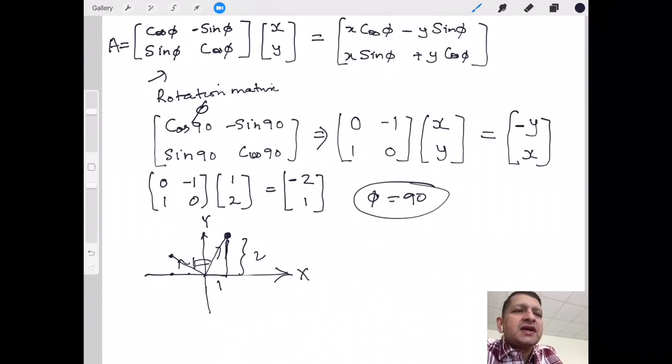Now the angle φ can be any angle we desire. So as we keep on changing the angle, you keep on getting a different transform. We changed 1, 2 to -2, 1.